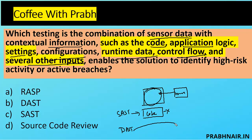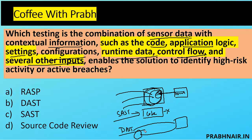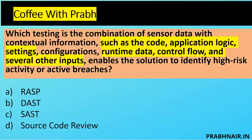In DAST, we test an application in a running state — whatever reply and response we get, we identify bugs from there. For example, entering SQL queries into a login page and observing the response. But here the question talks about runtime data, control flow, high-risk activity, and active breach detection. In SAST and DAST we don't get that visibility proactively, but in RASP we can integrate a plugin and in real time see what is happening. The answer is RASP.